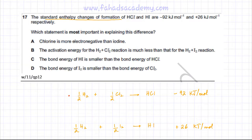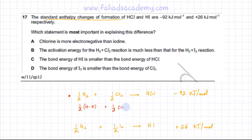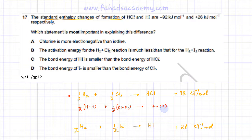In the first reaction (HCl formation), you're breaking half a mole of HH bonds and half a mole of ClCl bonds. The bonds being formed are one mole of HCl bonds. Bond formation is exothermic and bond breaking is endothermic.